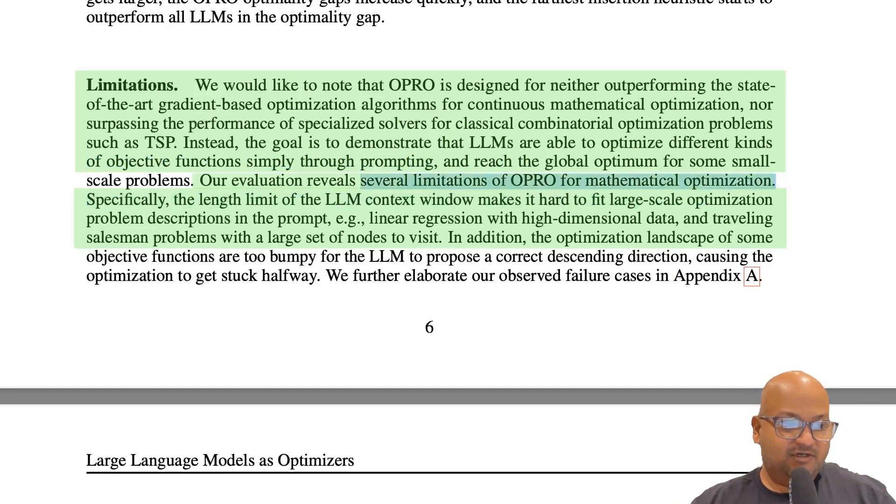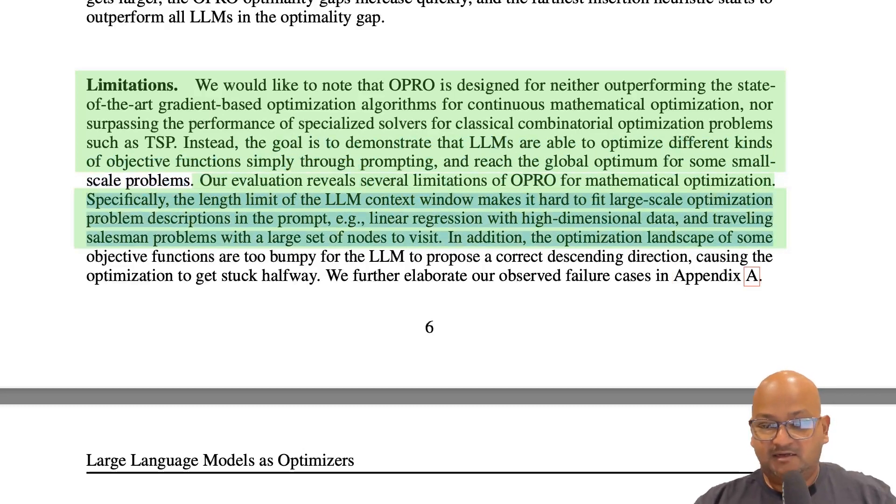In fact, they go on to note that using this approach for things like traveling salesman or linear regression has a number of disadvantages. One of which is that if the problem size gets large, you won't be able to fit in the context window to start with. So keep that in mind as we go through this paper.